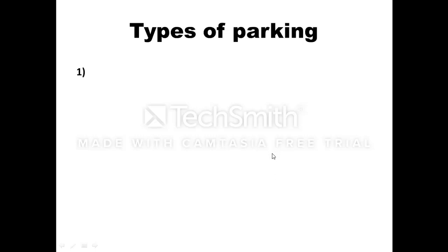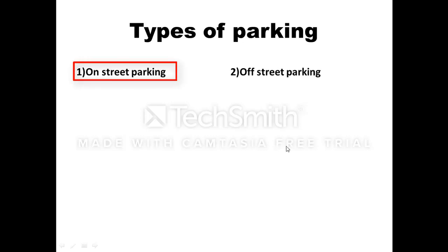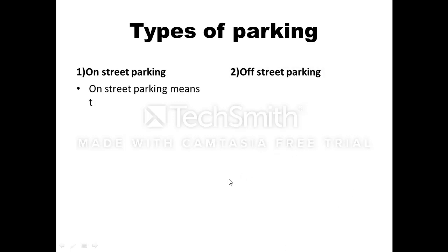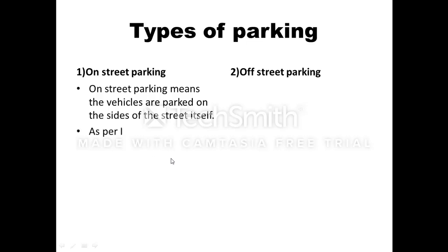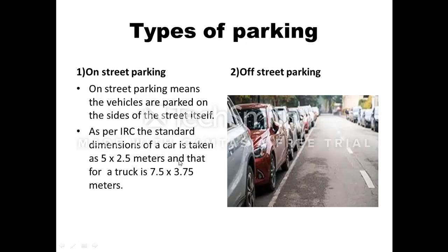There are two types of parking. The first one is on-street parking and the second one is off-street parking. On-street parking means the vehicle is parked on the side of the street itself. As per IRC, the standard dimension of a car is taken as 5 x 2.5 meters and that for a truck is 7.5 x 3.75 meters.